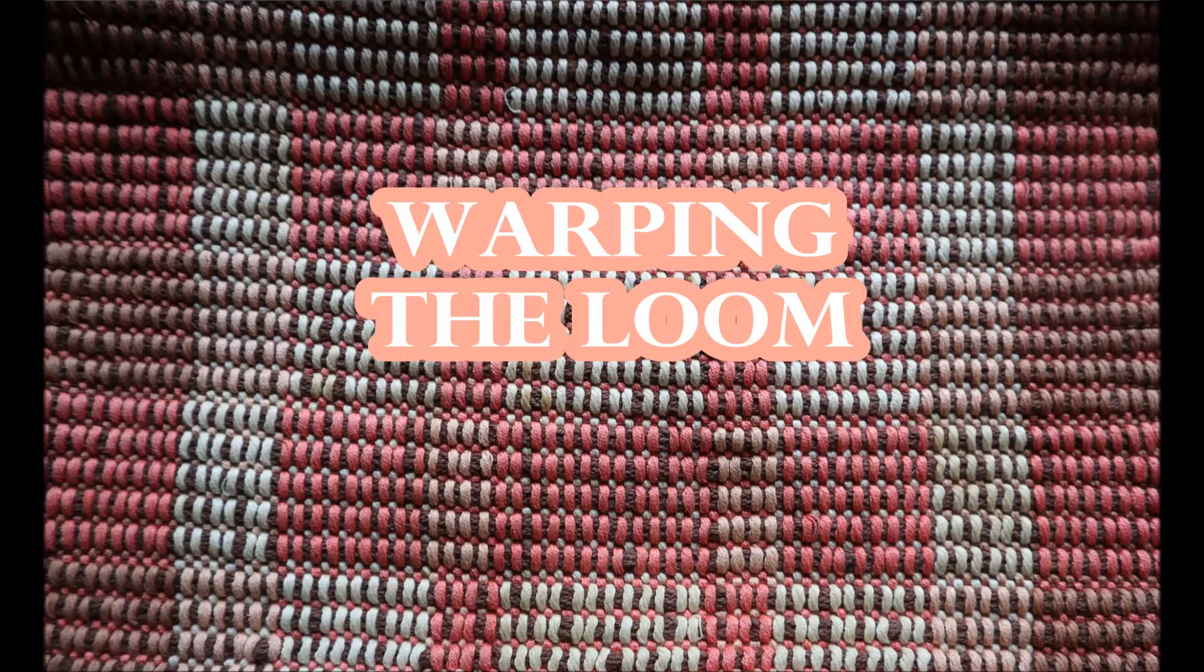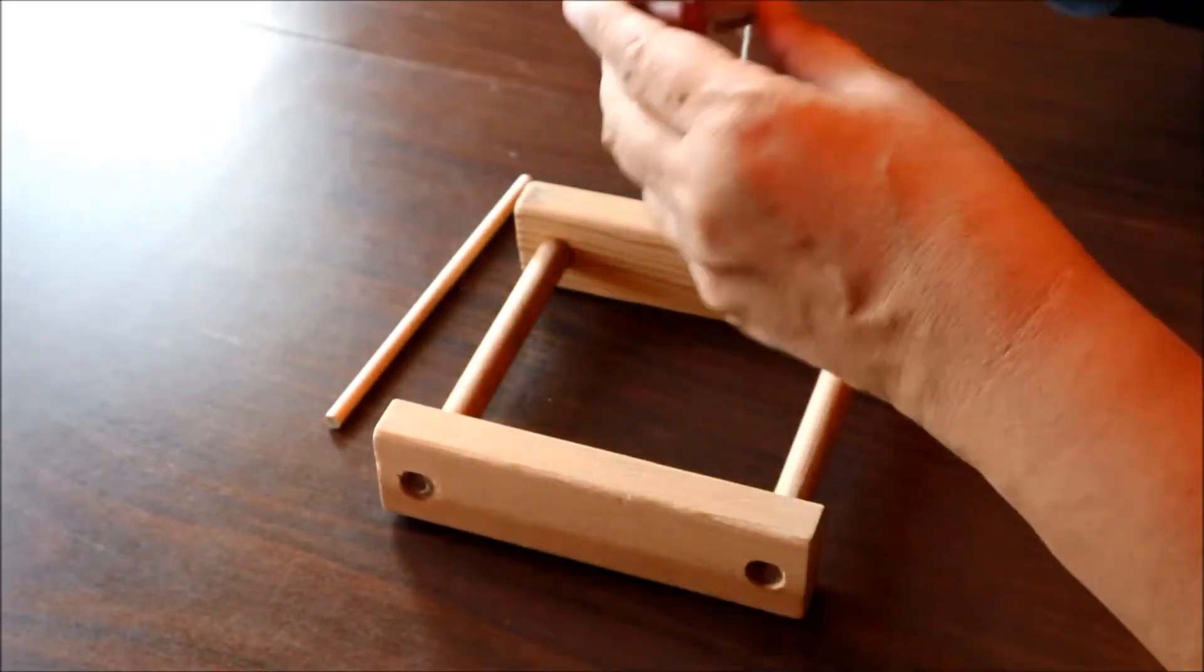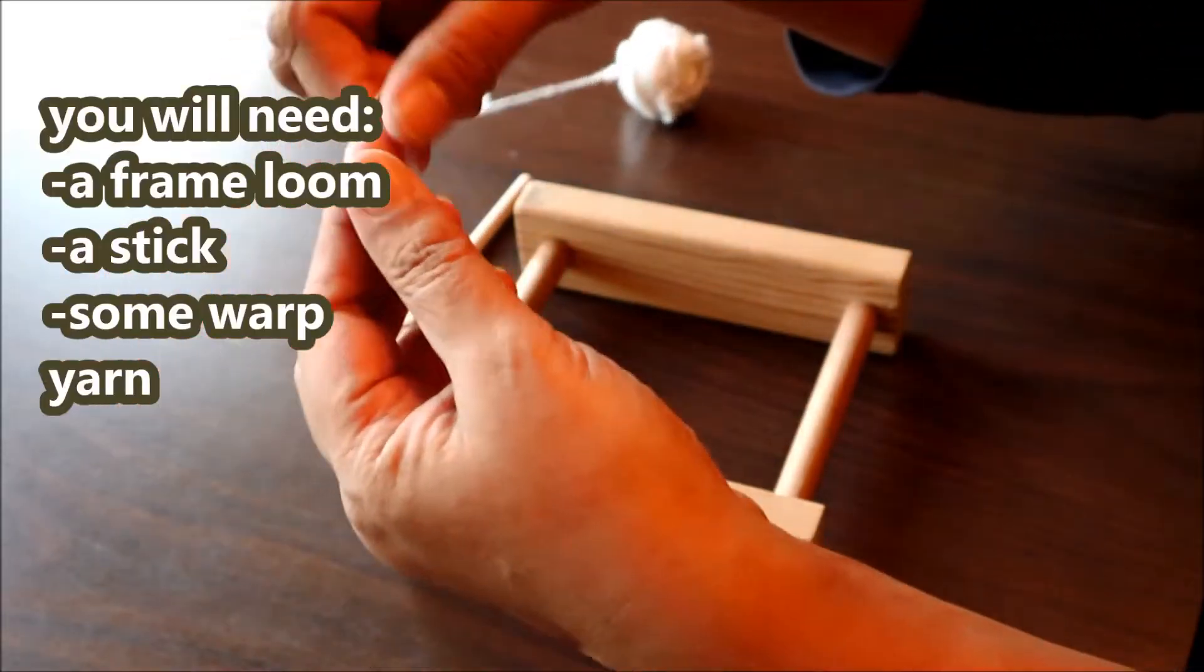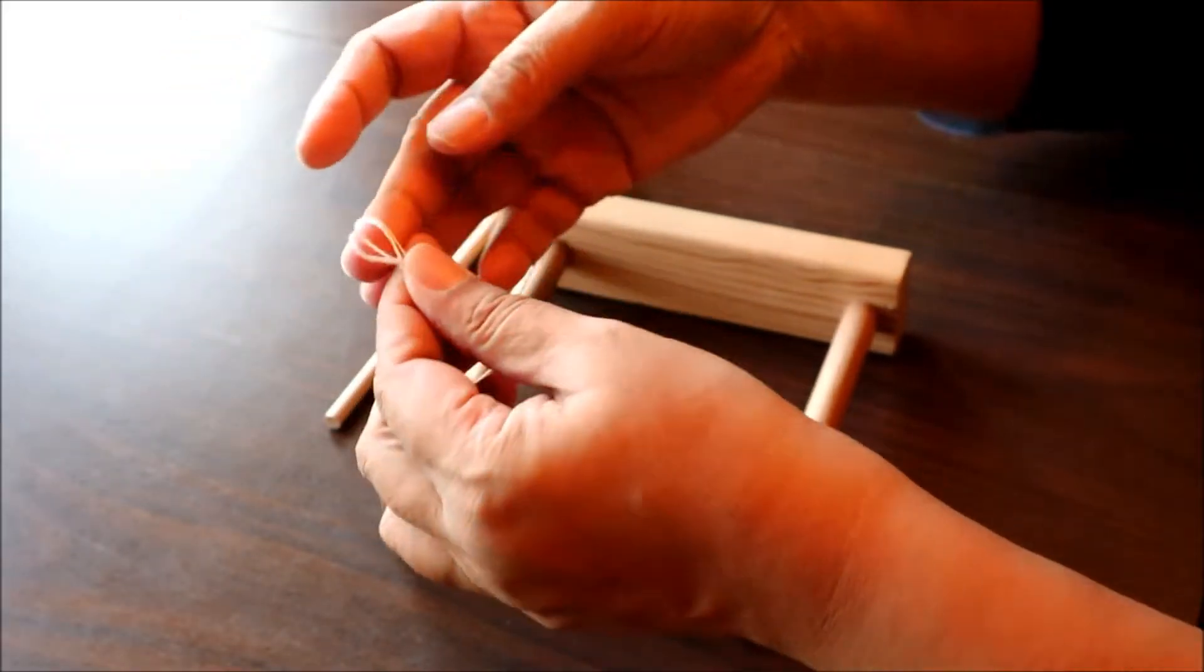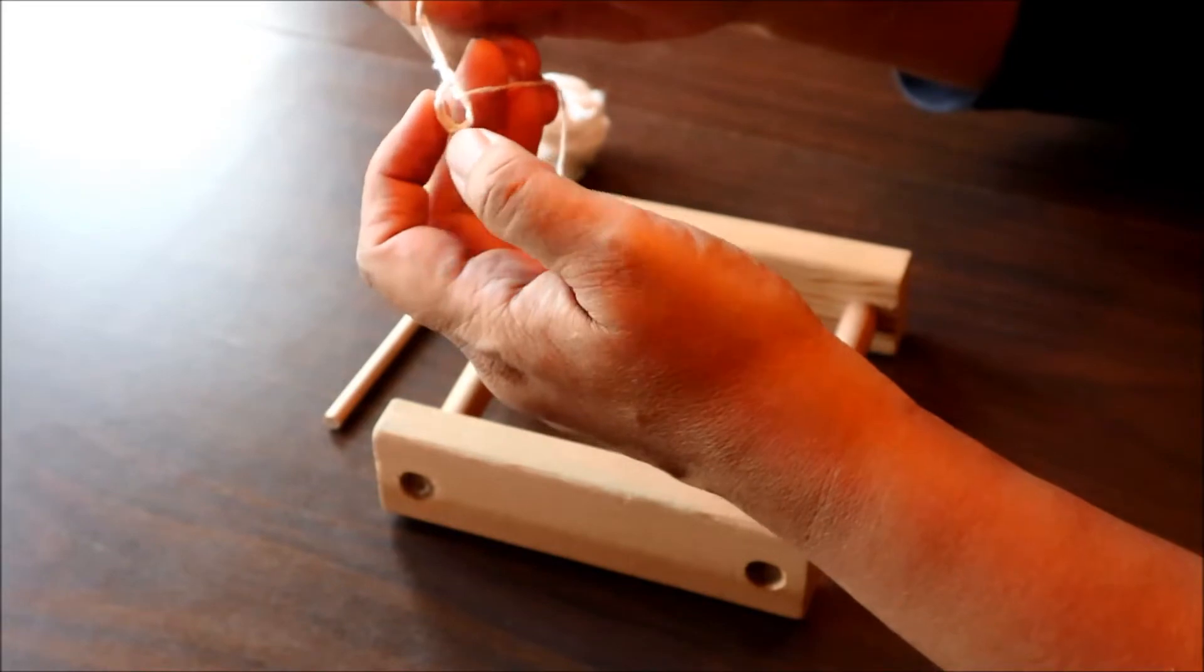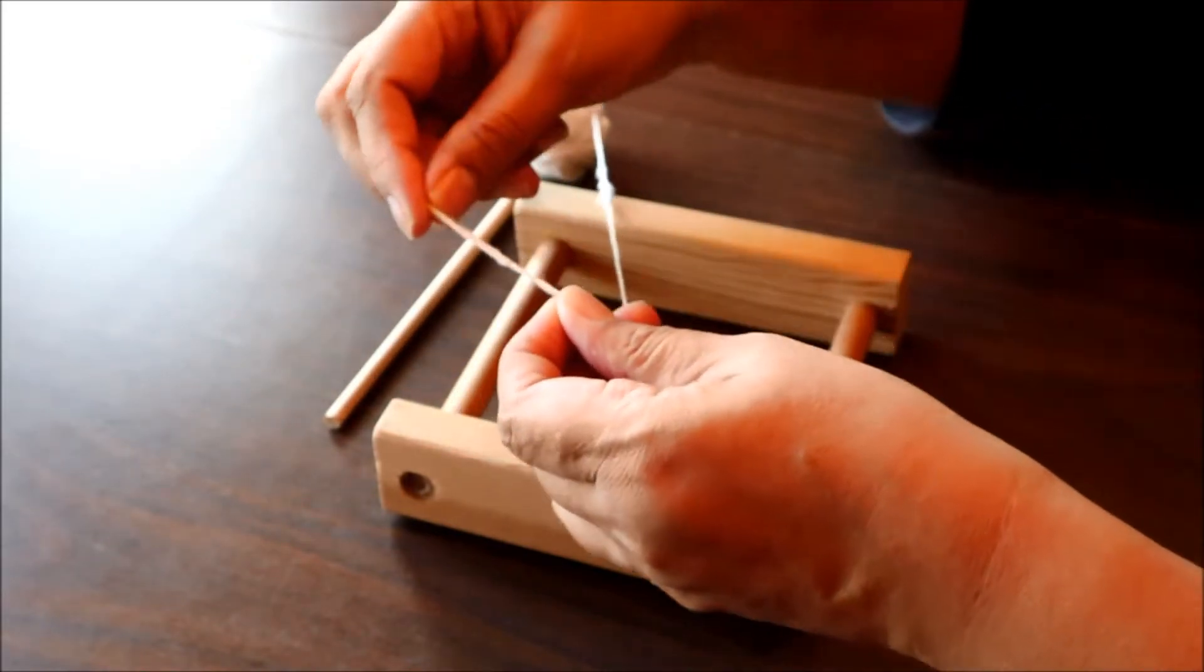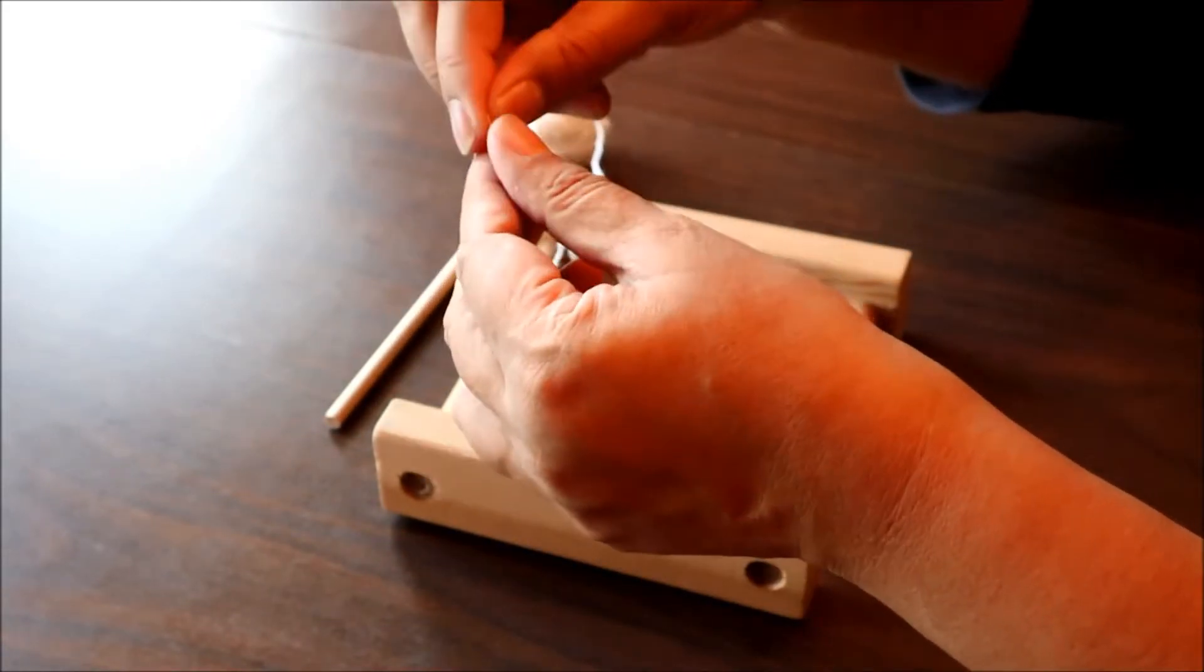Now, warping the loom. I've been asked by a few people to show them how to warp this style of loom, and I thought I would include that in this video. Let's see if I can give some verbal instructions for this that make some sense. So you make a loop and you tie that onto the stick that's going to be at the back of your loom, and then you start winding your warp around.